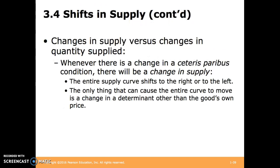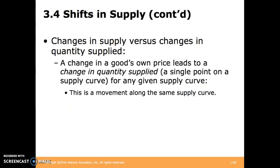Similar to demand, we need to distinguish between a shift in the supply curve and a change in quantity supplied. We have a shift in the supply curve when something we consider constant under ceteris paribus changes — the entire supply curve shifts right or left. The only thing that can cause the entire curve to move is a change in a determinant other than the good's own price. A movement along the supply curve due to a change in price is called a change in quantity supplied.